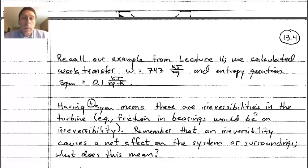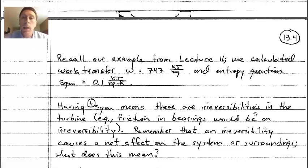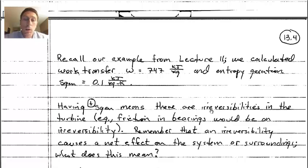Returning to the example from lecture 11, we calculated a work transfer of 747 kilojoules per kilogram and an entropy generation of 0.1 kilojoules per kilogram-kelvin. The positive entropy generation means that turbine has irreversibilities — things like friction in the bearings. The steam has a certain amount of energy, but we can only convert some of it into useful work because the rest overcomes the losses within the turbine.